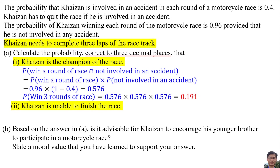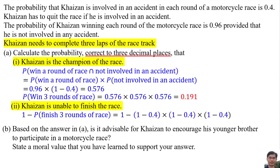Calculate the probability that Kaizan is unable to finish the race. The probability is 1 minus the probability of finishing 3 rounds of the race, which is 1 minus 0.6 times 0.6 times 0.6, equals 0.784.